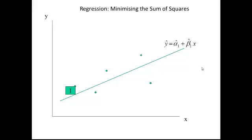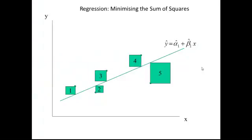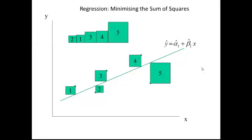The size of each square is represented by its area. We do that for each of the points, add these together, and we get the sum of squares associated with this particular estimate of the line.